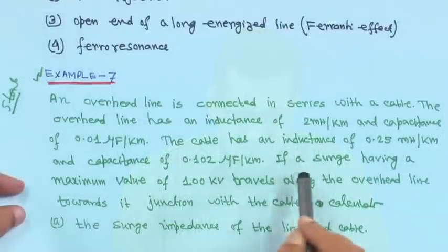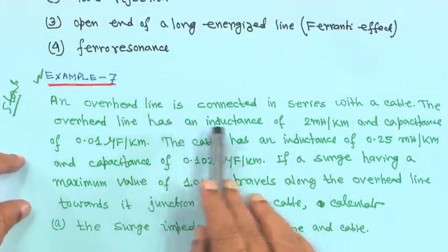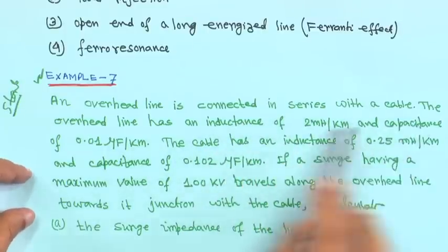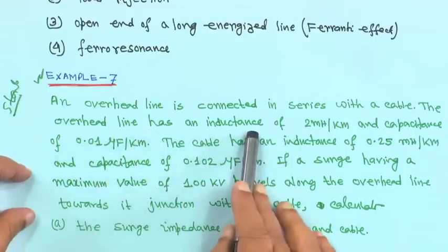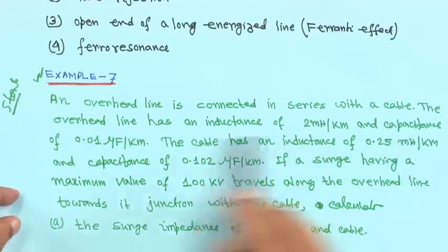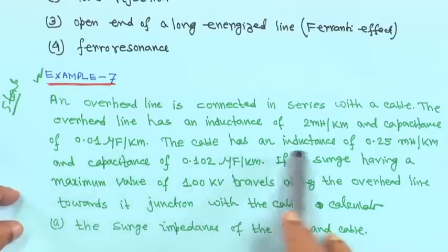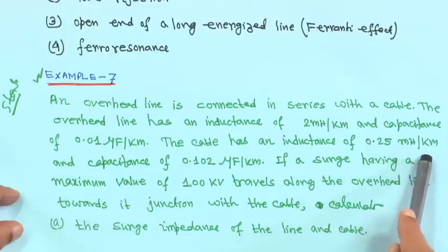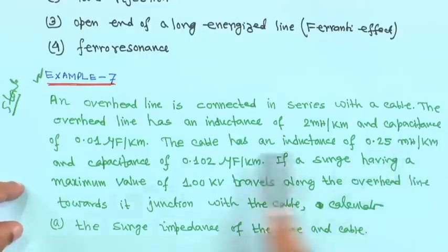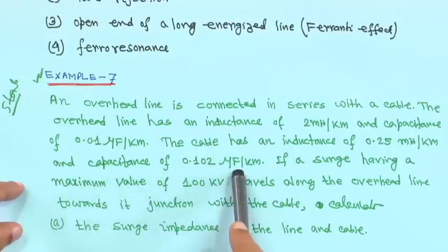We will come to example 7. It is given that an overhead line is connected in series with a cable. The overhead line has an inductance of 2 milli-henry per kilometer and capacitance of 0.01 micro-farad per kilometer. The cable has an inductance of 0.25 milli-henry per kilometer and capacitance of 0.102 micro-farad per kilometer.